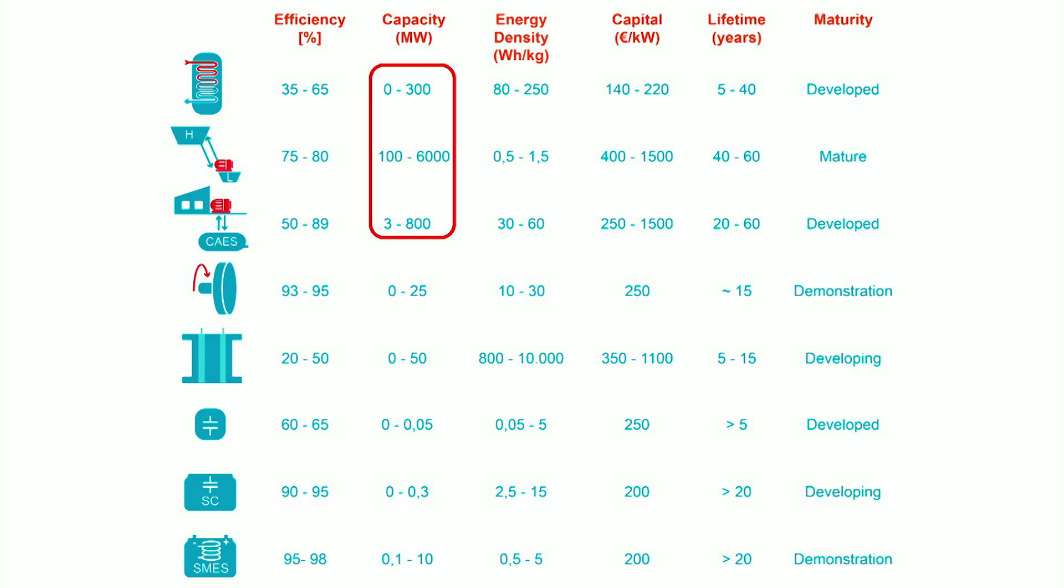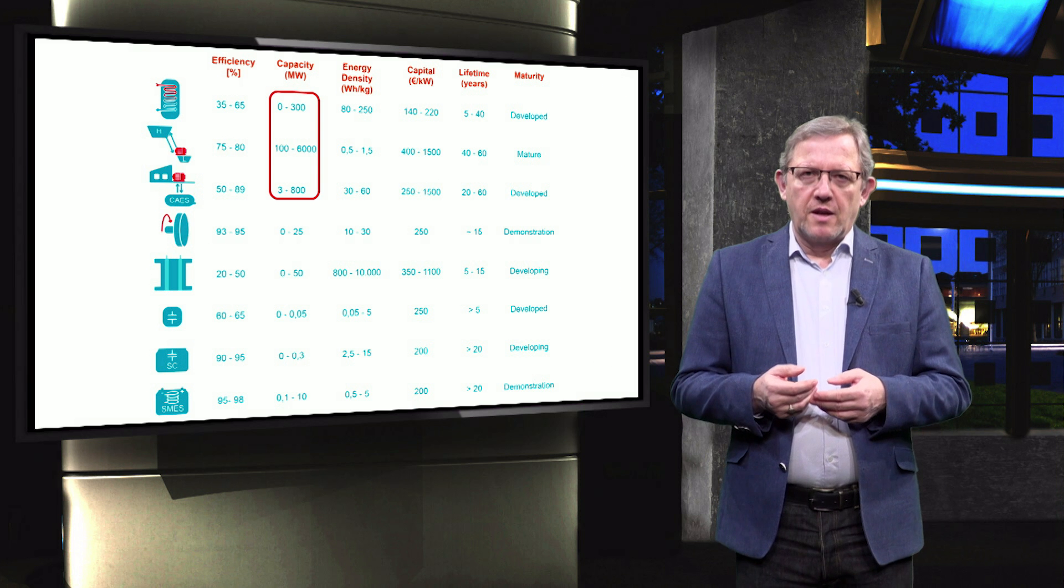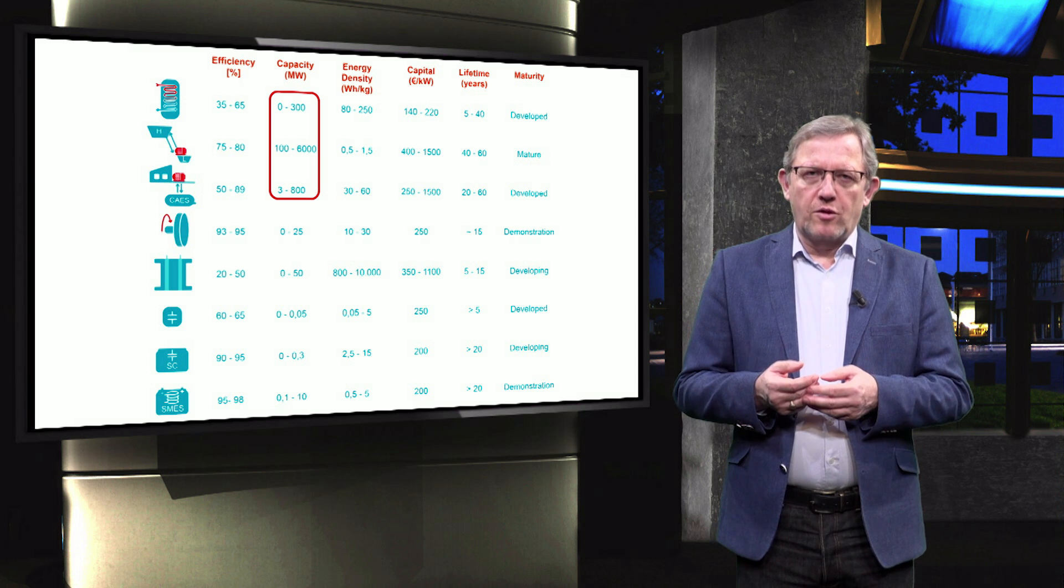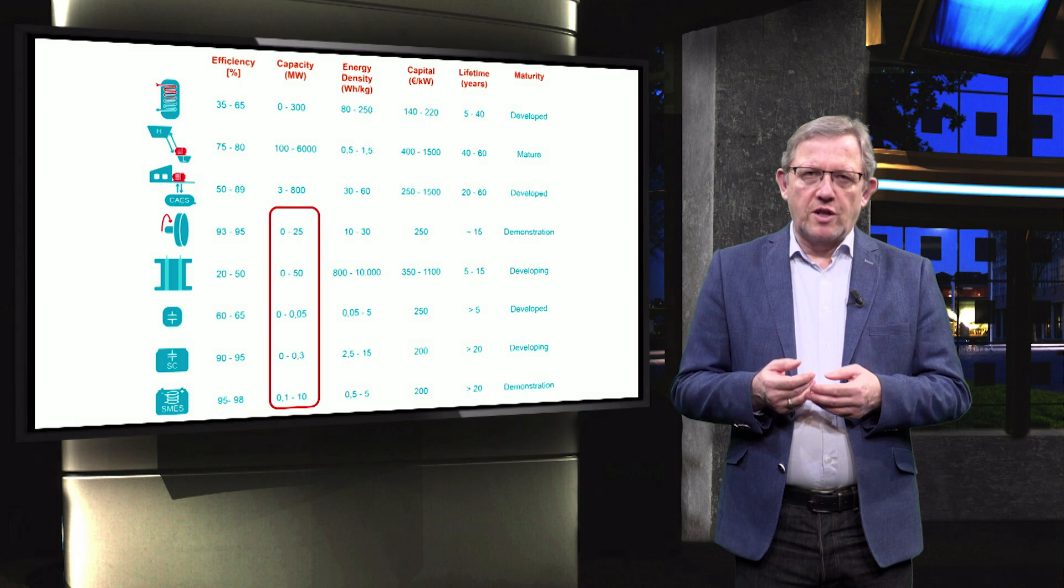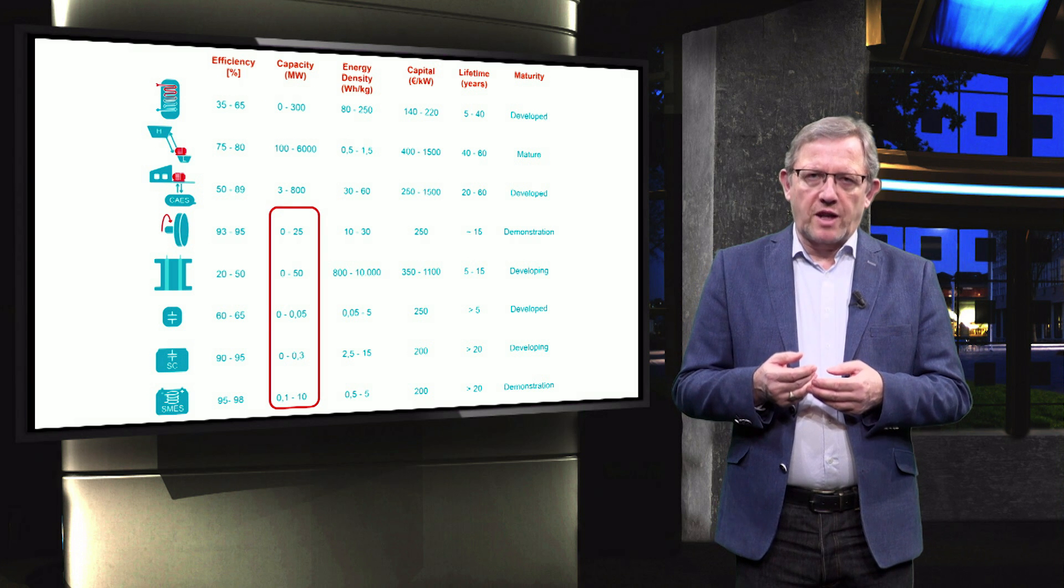Pumped hydro storage has the largest possible installed capacity of up to 6 GW while compressed air energy storage could reach up to hundreds of megawatts. The installed capacity of thermal units could be up to 300 MW. The rest of storage technologies would have a relatively lower installed capacity.